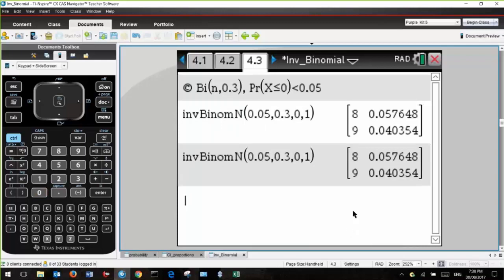For 8, it's too big. It's got to be less than 0.05. With 8, it's slightly higher, so it's got to be 9. 9 is the minimum. So that's two different ways of doing the same problem.